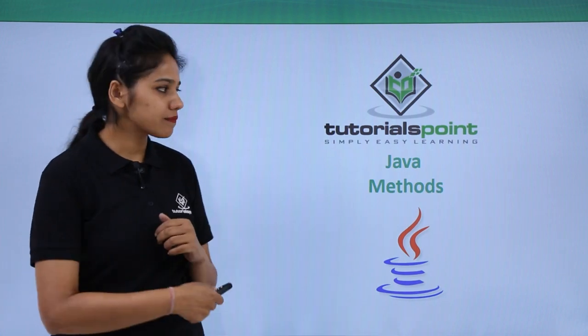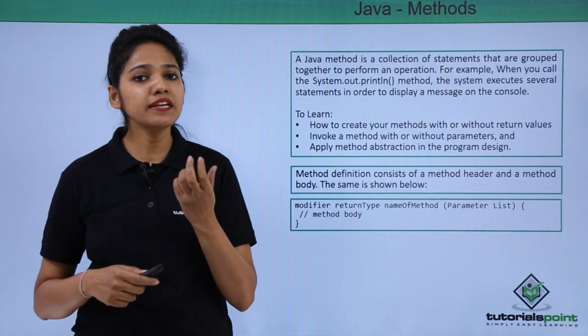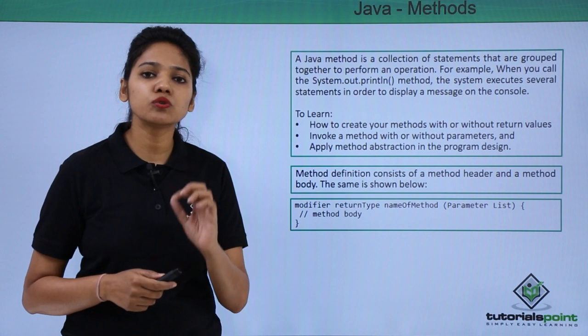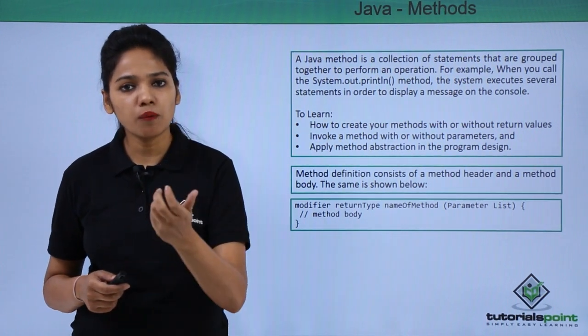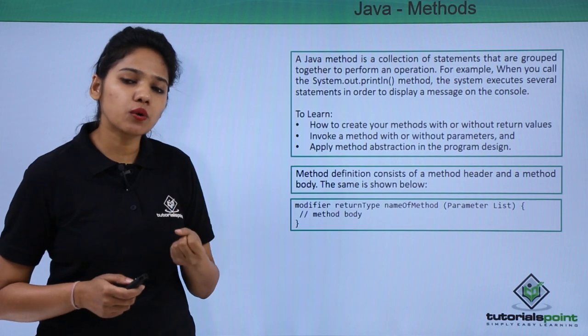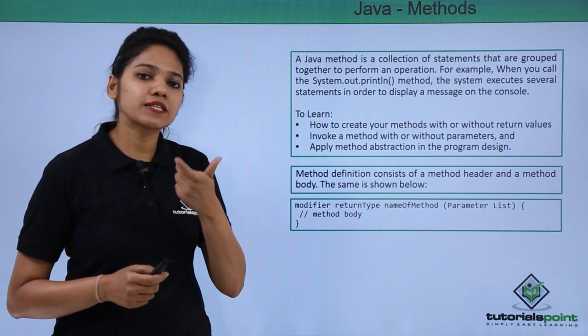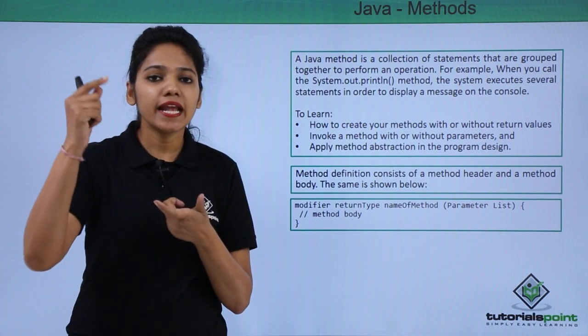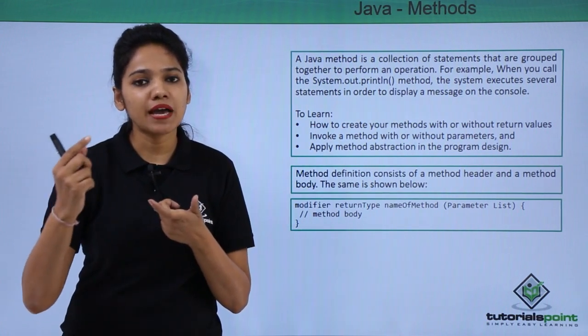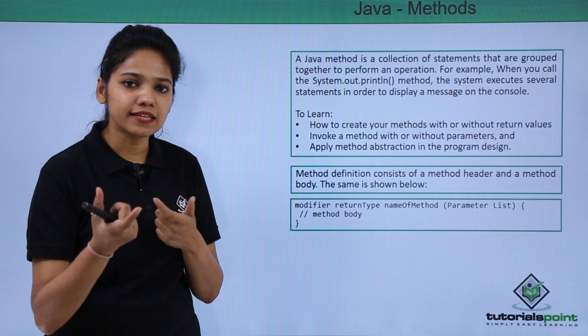So let us see what method does. A method is nothing but which allows you to execute a block of statements together to perform an operation, and what it requires is that in order to execute one single method it involves executing n number of operations in the backend to provide you a single output.